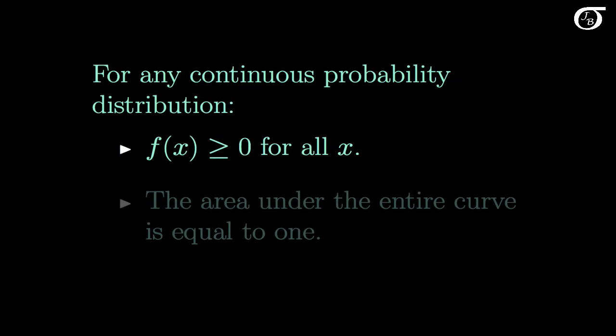For any continuous probability distribution, f of x has to be at least 0 everywhere. Note that there's no upper bound on it. It can take on values greater than 1. One restriction is that the area under the entire curve is equal to 1. And so these two restrictions ensure that all probabilities lie between 0 and 1, and the probability of something happening is 1.